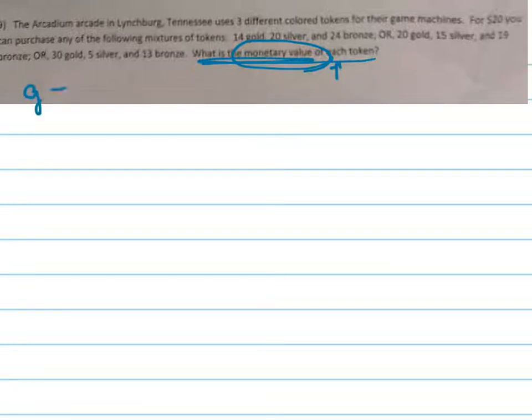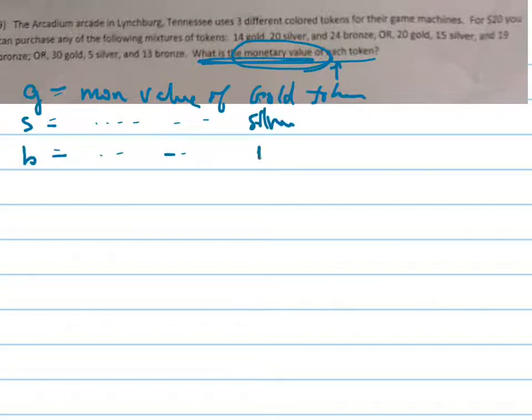G is going to be the monetary value of the gold token. S is going to be the monetary value of the silver token. And B is going to be the monetary value of the bronze token.